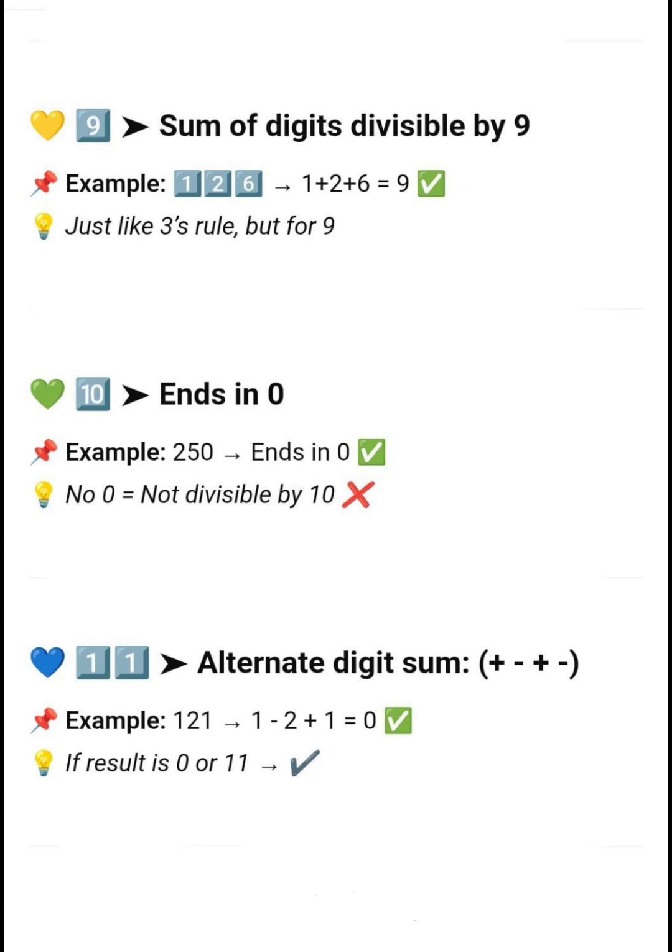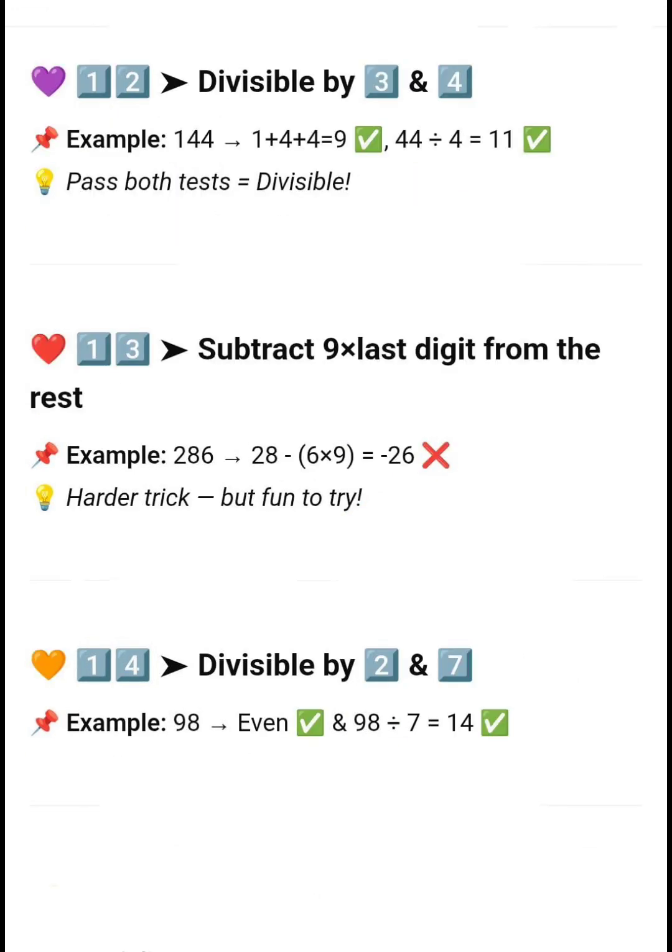Next, divisible by 10 — if a number ends in 0. Next, divisible by 11 — if the sum of alternate digits differs by 0 or 11, then that number is divisible by 11. Next, divisible by 12 — if a number is divisible by both 3 and 4.